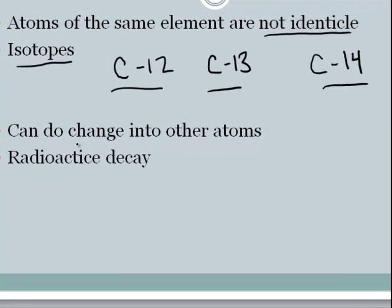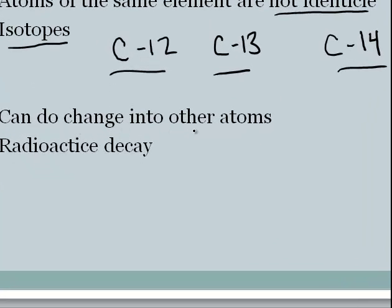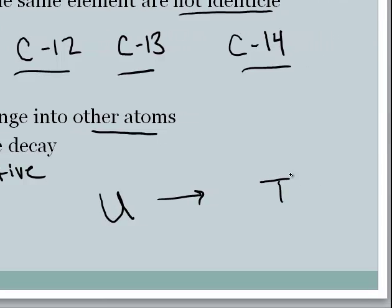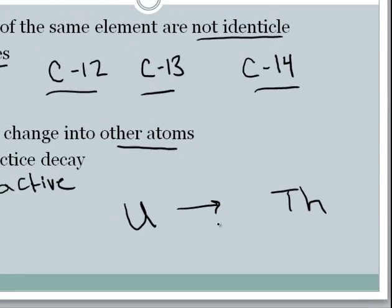We also know that atoms can change into other atoms. This is what we refer to as radioactive decay. Uranium, for example, can decay into thorium or other compounds, and thorium can decay into other compounds. We'll talk about nuclear decay in another podcast in a different unit.